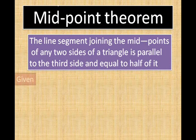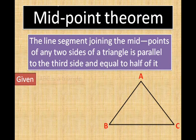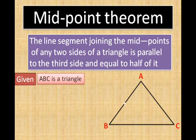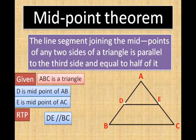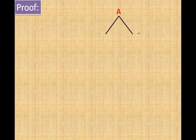Now we take the midpoint theorem. We are given triangle ABC, where D is the midpoint of AB and E is the midpoint of AC. We have to prove that the line segment joining the two midpoints is parallel to the third side and is half of the third side. We see the proof in the next slide.